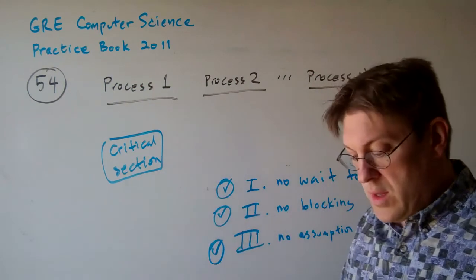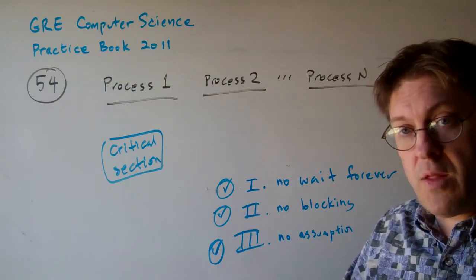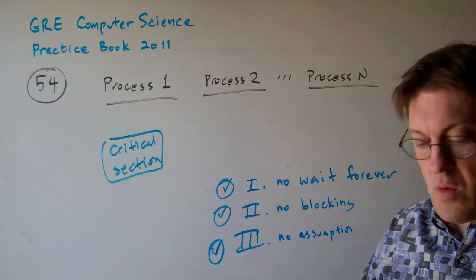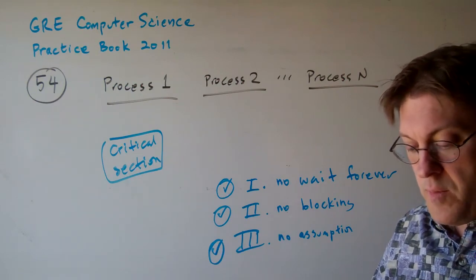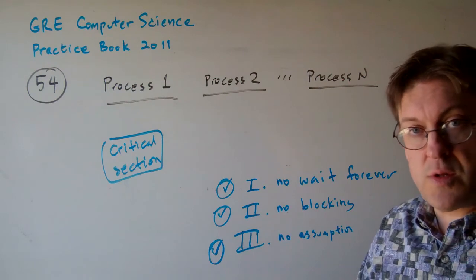So basically, that's why the answer to this question 54 is E, 1, 2, and 3. All three of those things would be useful to create a good solution for the mutual exclusion problem.